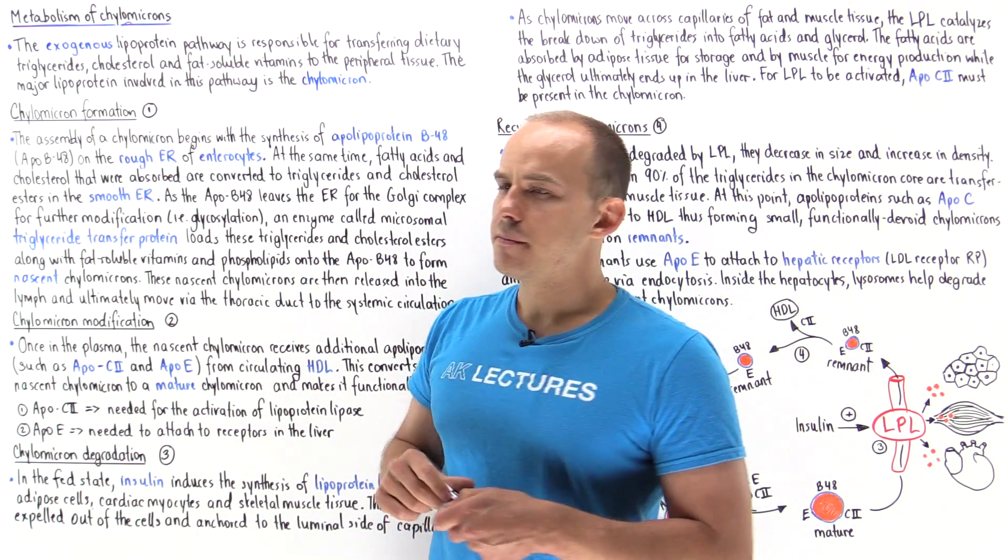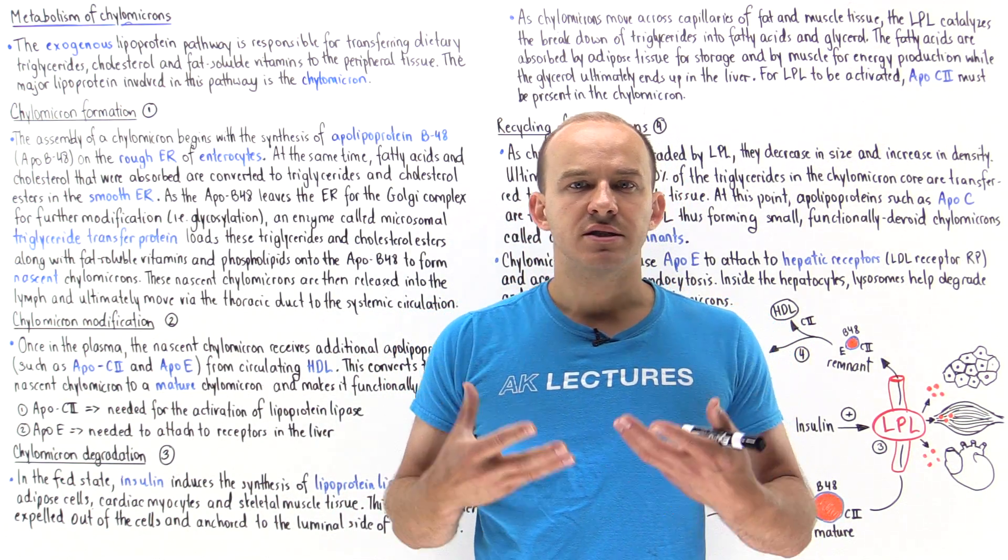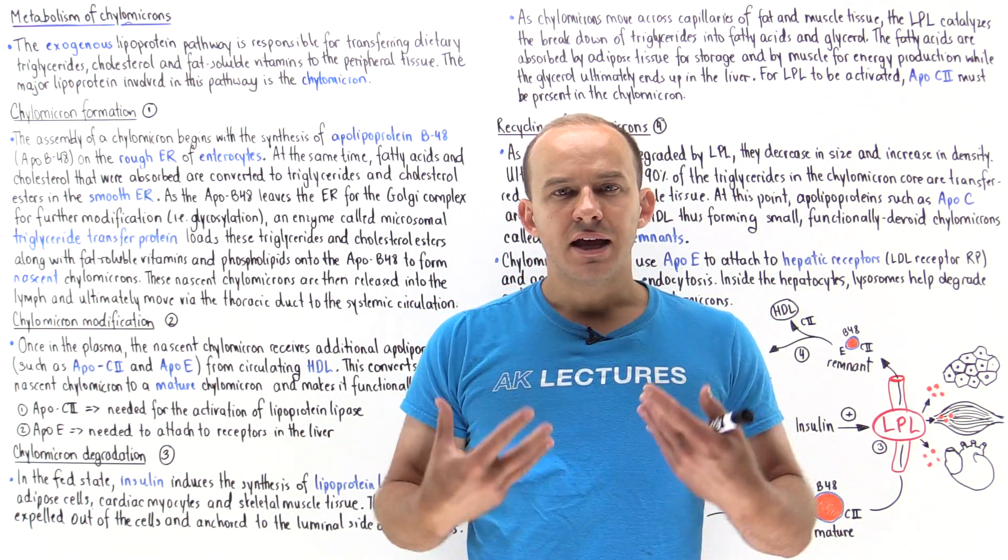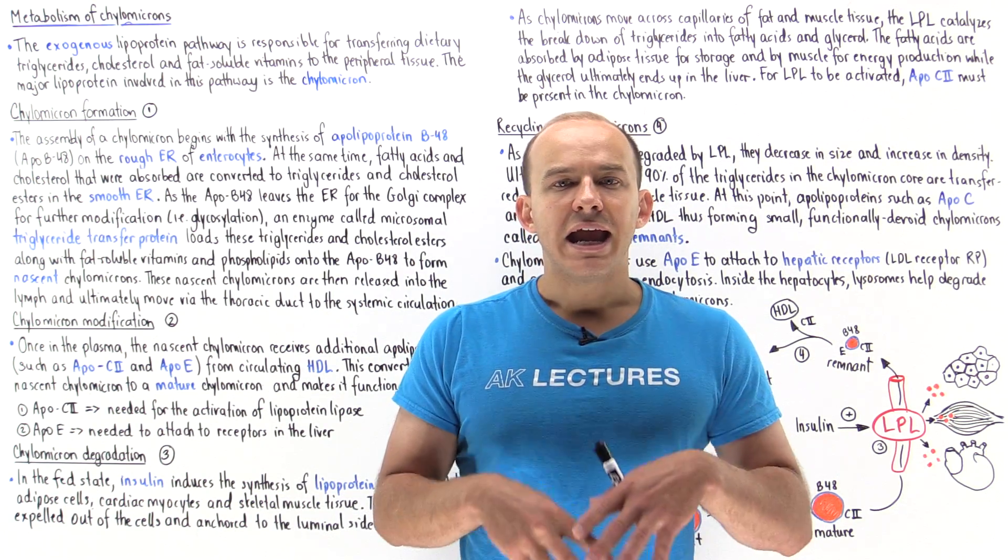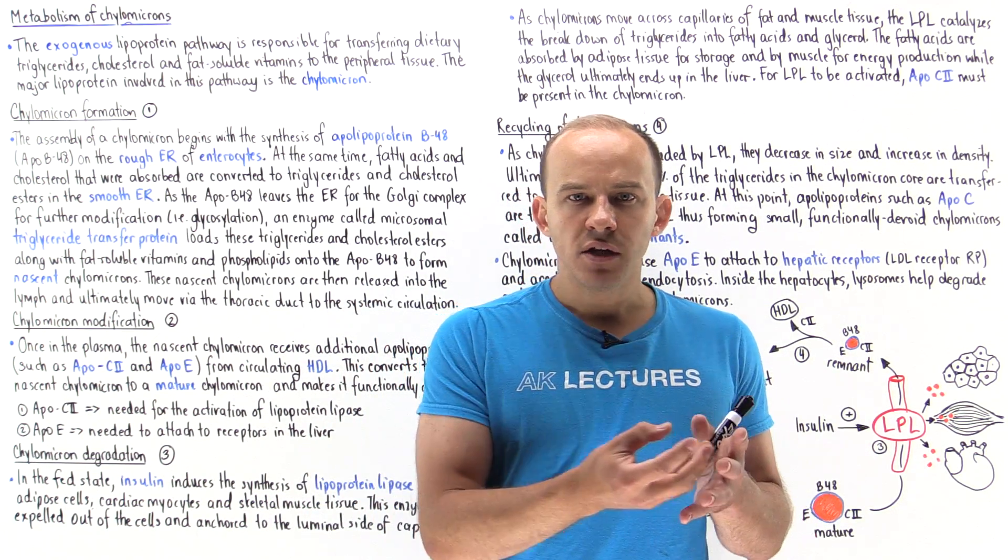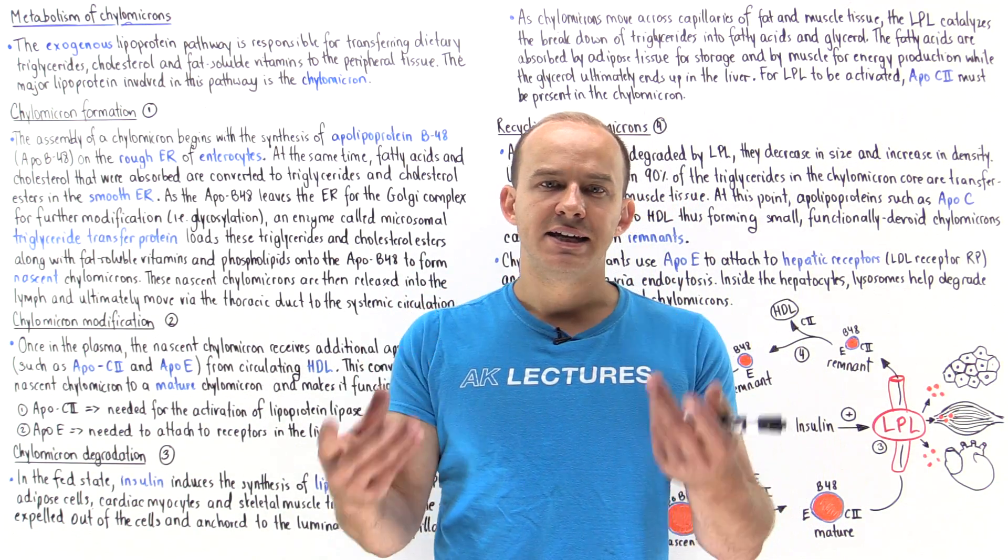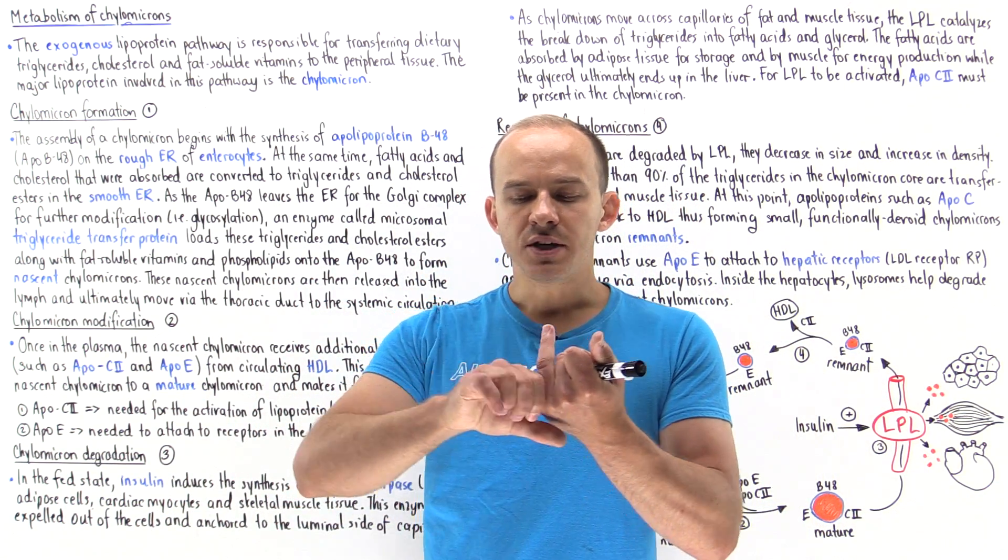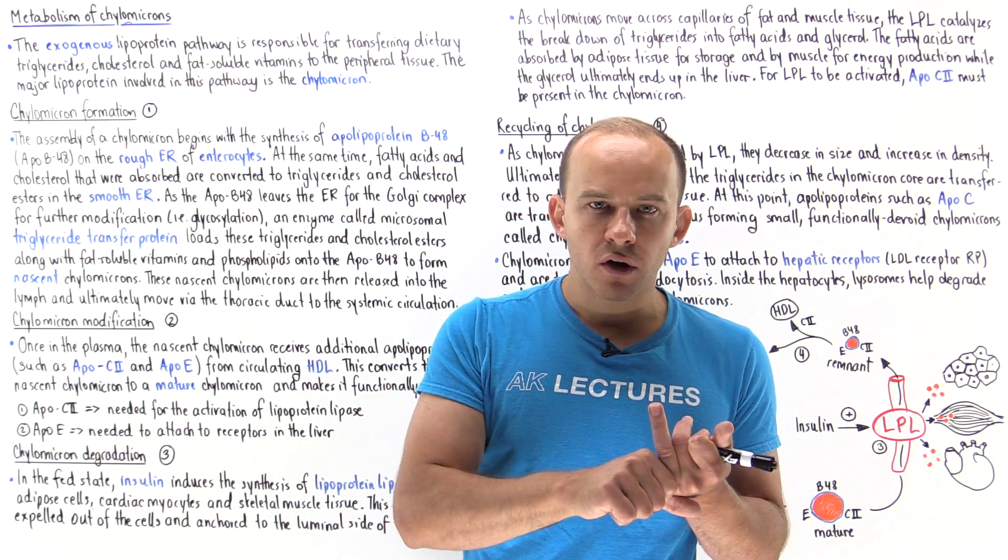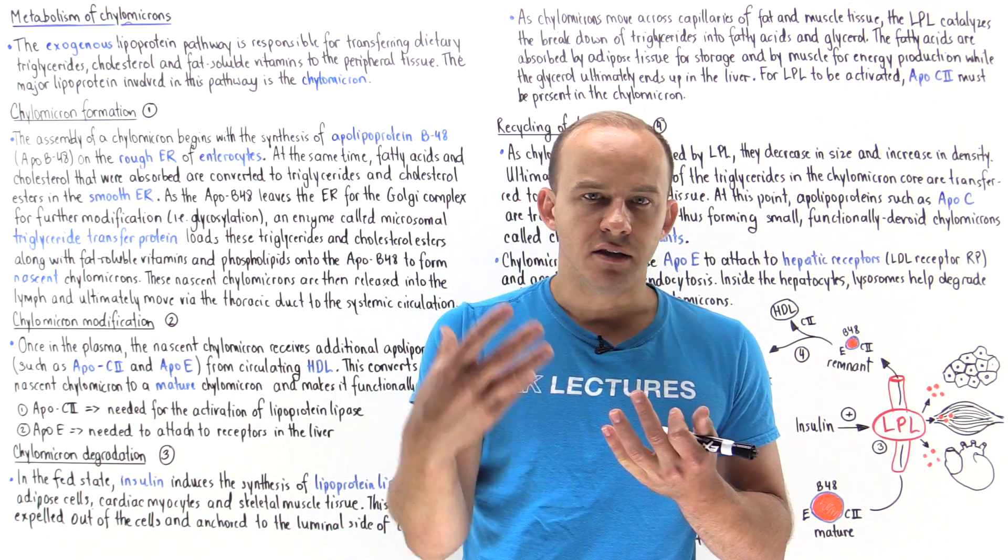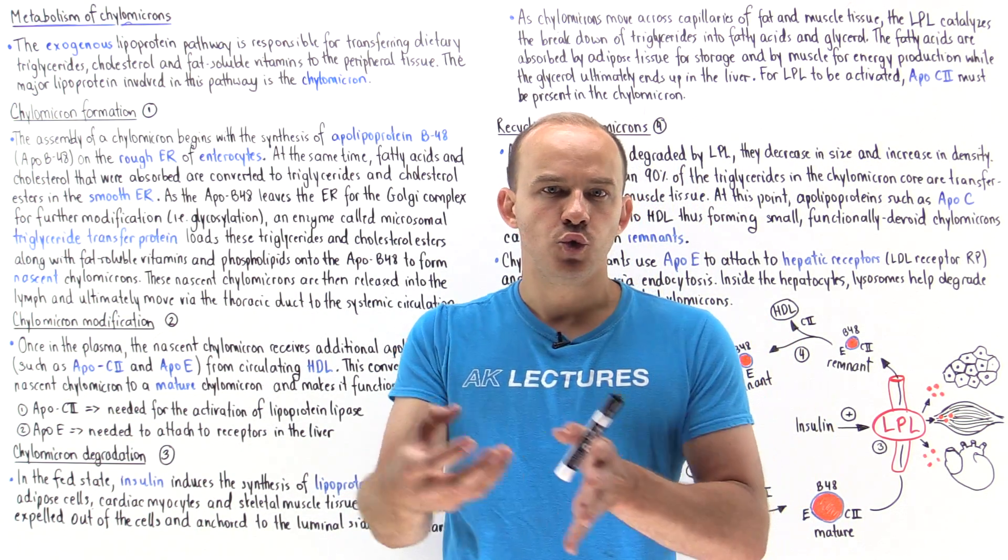Let's begin by talking about how we form these chylomicrons. Suppose we ingest a meal rich in fat. The fat ends up in the lumen of the small intestine where it mixes with bile and that emulsifies the fat, allowing it to break down the triglycerides into fatty acids and glycerol. The enterocytes of the small intestine are able to absorb the fatty acids, glycerol, cholesterol, and fat soluble vitamins into the cell.